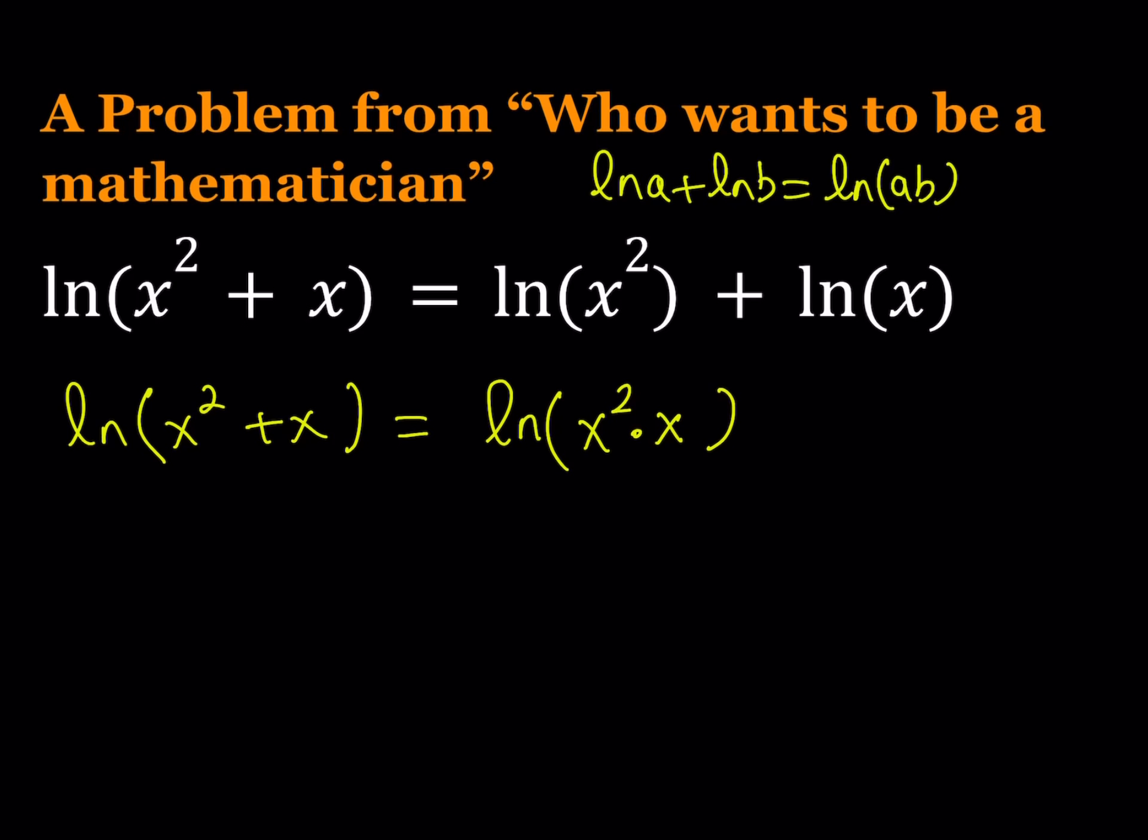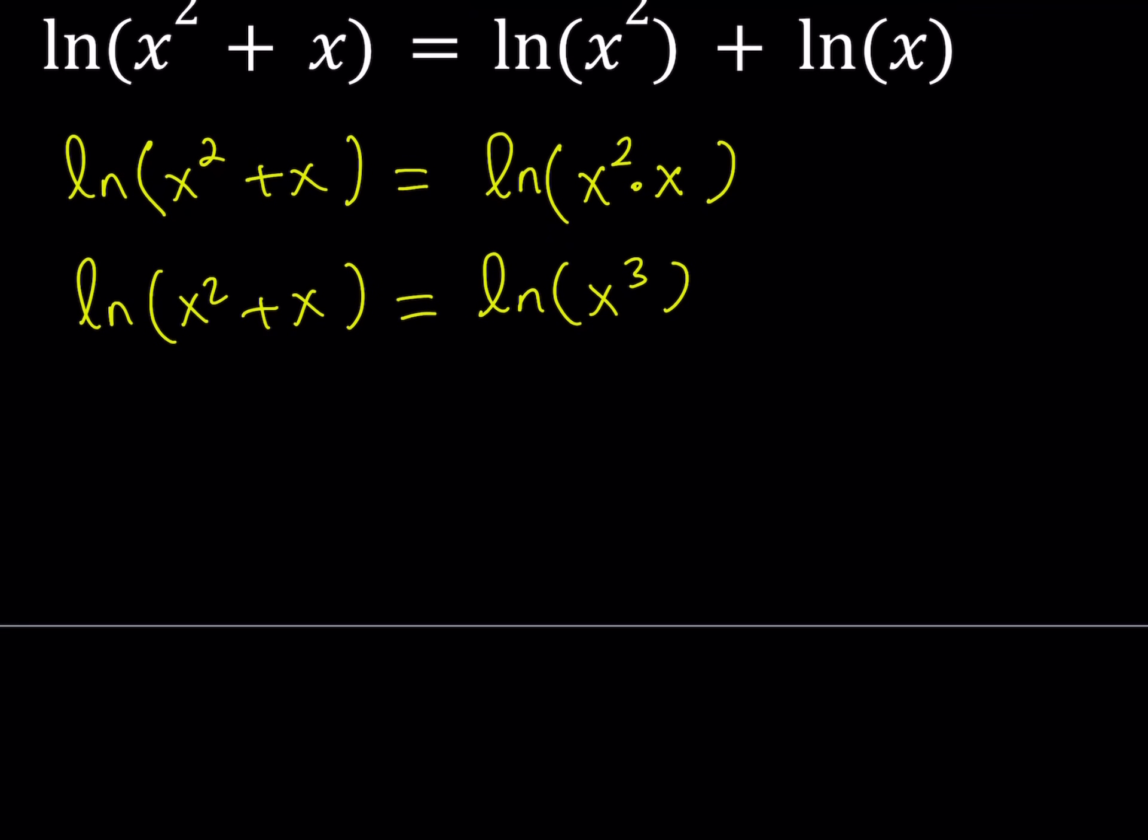Now what am I getting from here? Well, I'm getting a product, so that kind of looks like I can multiply them, right? Okay, let's see. Well, this gives me ln x squared plus x equals ln x cubed. Because x squared times x is equal to x cubed, right? Okay, great. What can I do next?